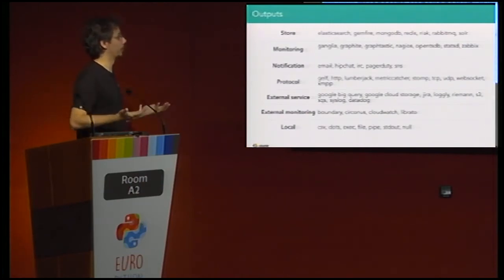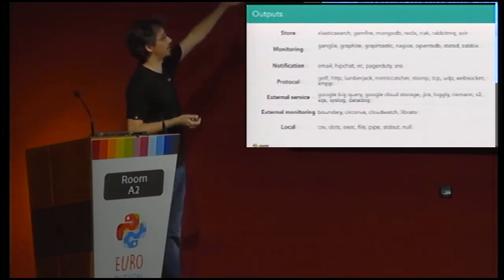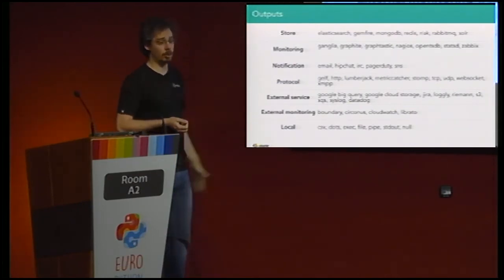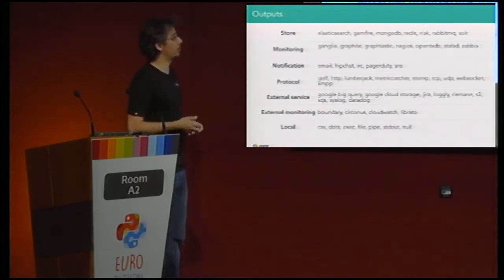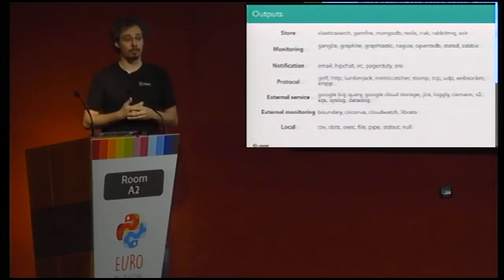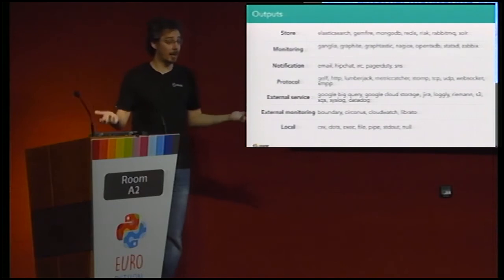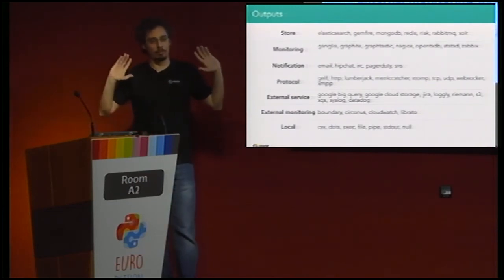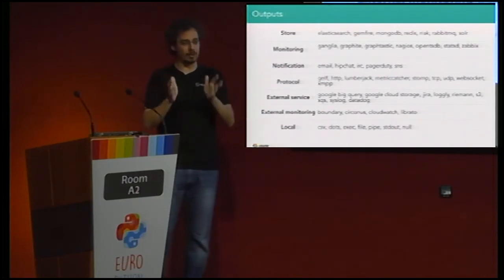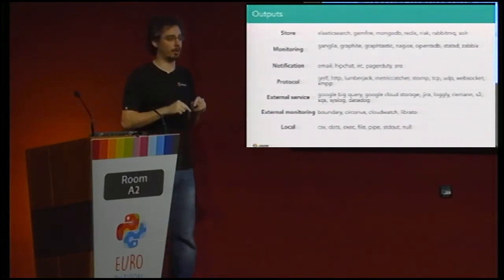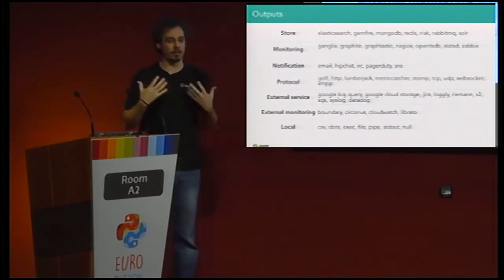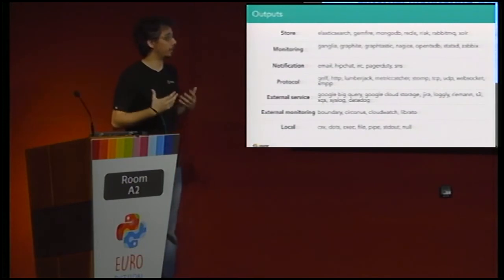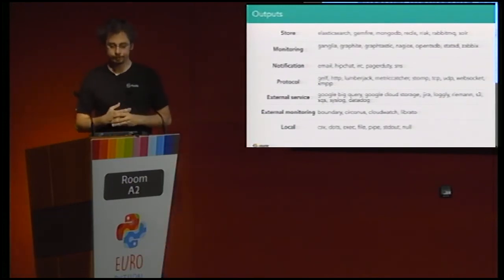Logstash also has a number of different outputs. The crucial one is probably Elasticsearch, but there are many others — you can write to a different queue, to a completely different storage, or even to MySQL if you're so inclined. What you can do quite easily is: put all the data in Elasticsearch, and if you see some critical error, send that to me over email — and if it's really critical, ping PagerDuty and have your pager go off so you can jump on it right away. You can have multiple different outputs with filters, so you can be alerted in real time.